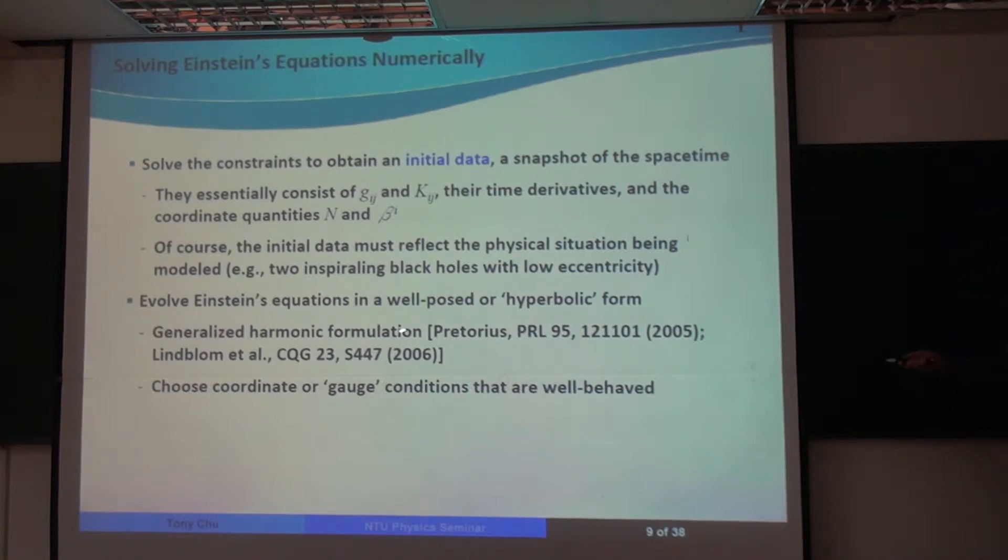And in addition to dealing with this well-posedness issue, we also have to determine the coordinates that we use. They're usually dynamical coordinates, because in general relativity we have this coordinate freedom. And we have to fix that freedom in order to actually do our calculations. And this is analogous to fixing the gauge conditions for the scalar and vector potentials in electromagnetism.